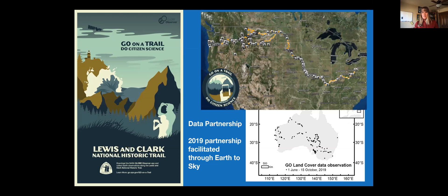You can see all of the observations these scouts collected — it was just astonishing. His scouts ended up winning the Asia region of our Go on a Trail Challenge, they did so much. Interestingly, some of those data sites, particularly in the interior of Australia, are places that just don't have land cover data — it's very remote and difficult to get to. These scouts created a unique data set, which is super exciting.